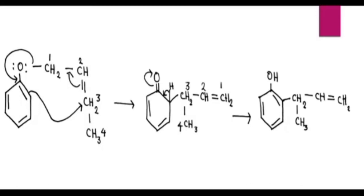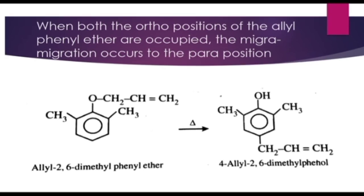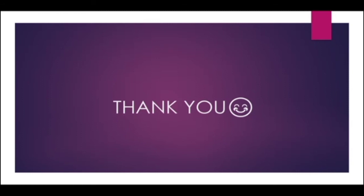Here is the Claisen rearrangement mechanism for crotyl phenyl ether. When both ortho positions of the allyl phenyl ether are occupied, migration occurs to the para position. Here is the example: allyl 2,6-dimethyl phenyl ether undergoes Claisen rearrangement to form 4-allyl 2,6-dimethyl phenol. In allyl 2,6-dimethyl phenyl ether, both ortho positions are blocked by CH3 groups, so this allyl group attaches to the para position. This is all about Claisen rearrangement.